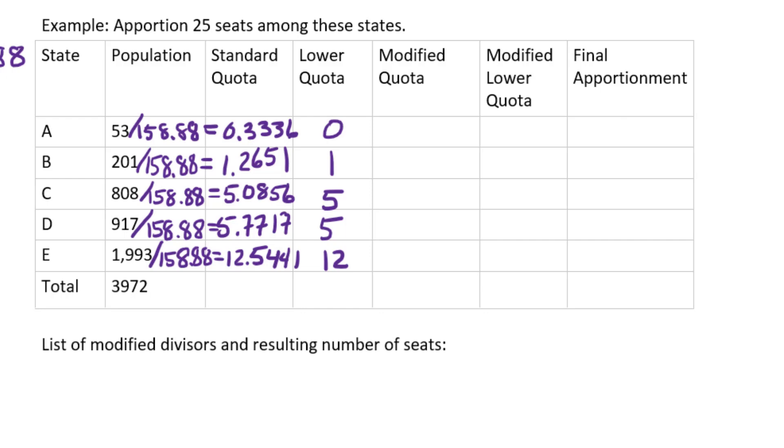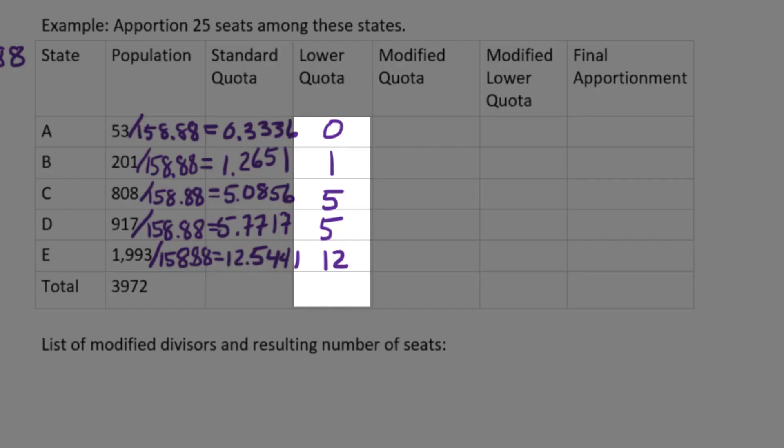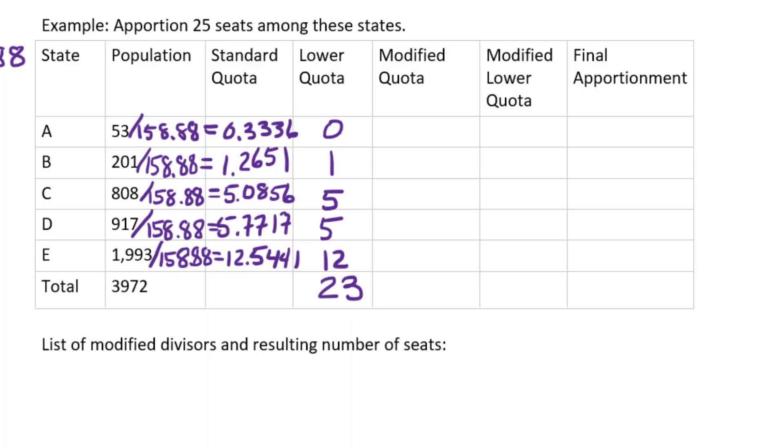And then I'm going to add up the lower quotas and see how many seats we would be distributing if we handed out just the lower quotas. So 1, 5, 5, and 12 adds up to 23. There were 25 seats, so we have two extra seats that need to be handed out.